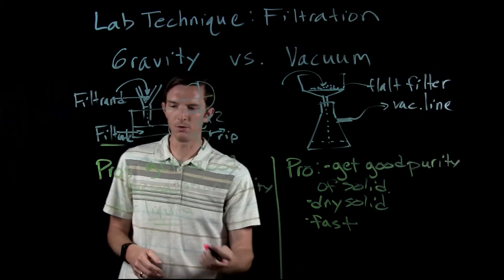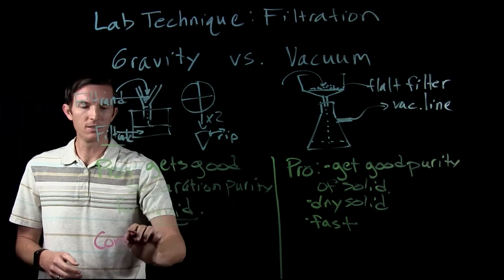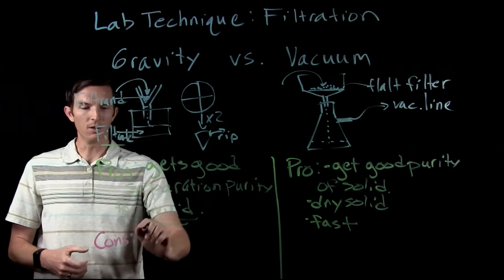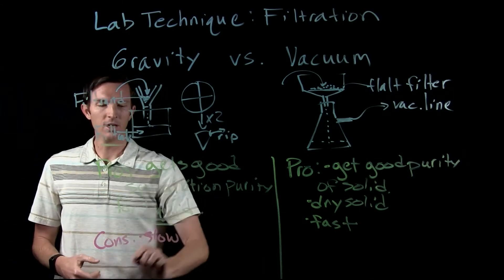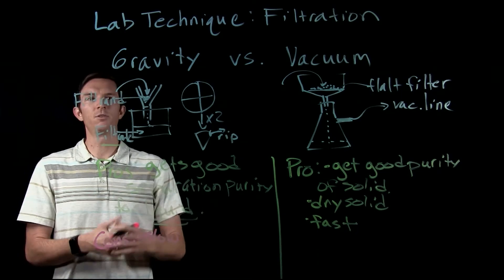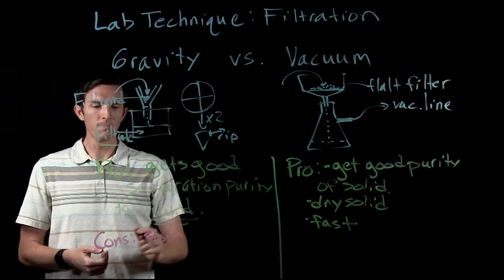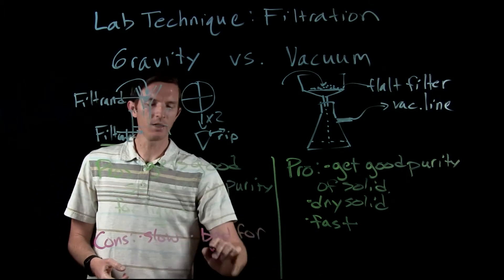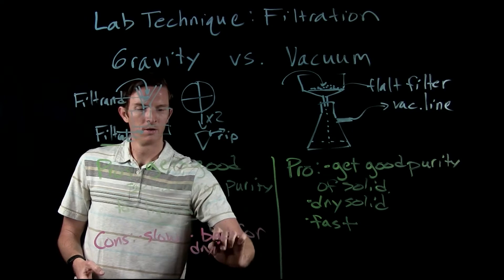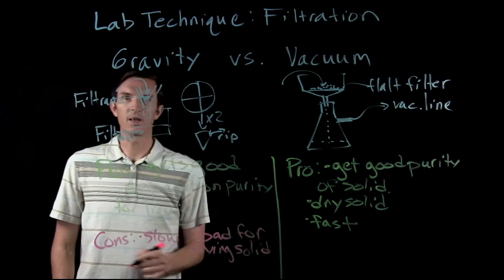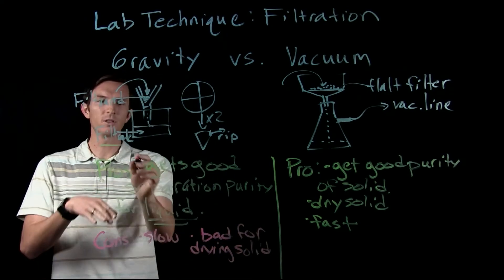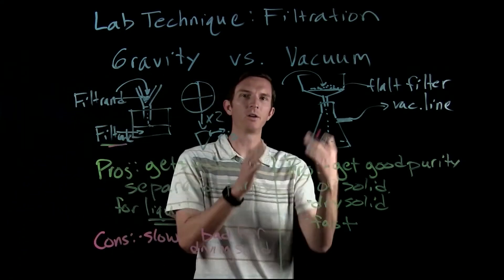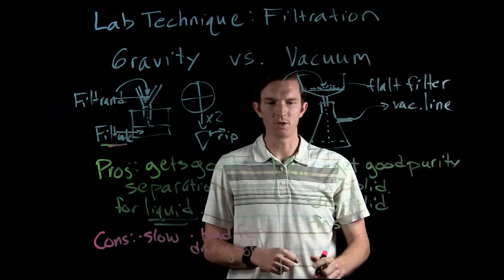Now let's talk about what would be the cons of these two. Why would we not want to do gravity filtration or vacuum filtration? First off, it's fairly slow for us to do gravity filtration. It usually takes a little while for the gravity to pull that liquid through, and it's not good for drying our solid. So again, if we're focused on the filtrate, we probably would want to do gravity filtration. If we're focused on the crystal leftover, we would probably want to do vacuum filtration.